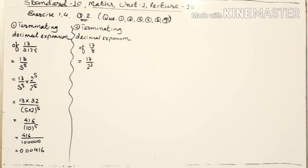For the second number, to get the terminating decimal expansion of 17 upon 8, I have factorized its denominator. By making its prime factorization, I got 2 raised to 3. Now to convert it into decimal expansion, I require as many 5s as there are 2s — since 2 raised to 3 is there, I require 5 raised to 3 in the denominator.